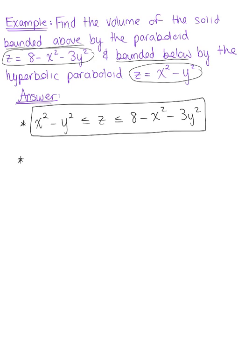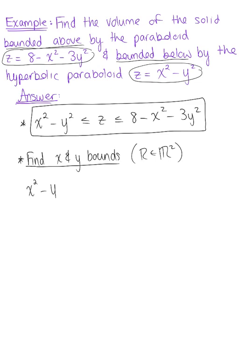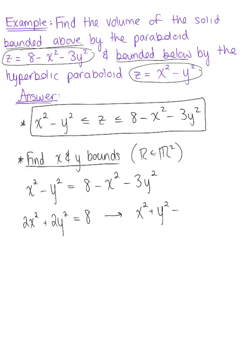Now we want to consider the solid's projection into two dimensions to find the X and Y bounds. Since this is a projection into the XY plane, Z = 0, so we equate the surfaces: x² - y² = 8 - x² - 3y². Bringing everything to one side gives 2x² + 2y² = 8, and dividing both sides by 2 yields x² + y² = 4, which is a circle centered at the origin with radius 2.